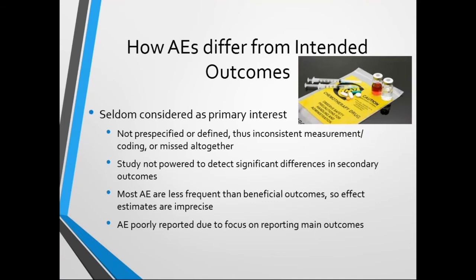Studies are often not powered to detect significant differences in secondary or tertiary outcomes. Given that most adverse effects are less frequent than beneficial outcomes, the eventual numerical data yields effect estimates that are imprecise, with very broad confidence intervals, and we're not sure whether there is a genuine difference in adverse effect rates. Because adverse events are poorly reported and most authors are focused on reporting the main outcomes, we are not very clear on the reporting of such events in the published manuscript.